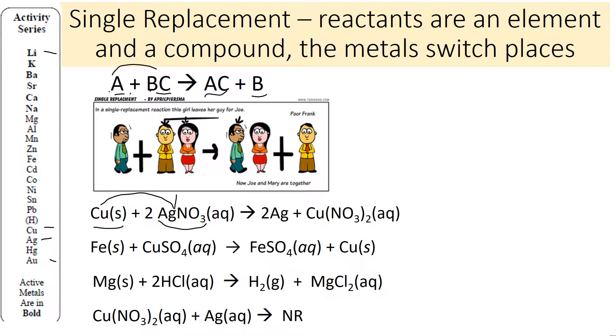The copper is going to go with the nitrate, and the silver is going to be by itself. Now, you may wonder what's that two doing, AgNO3 subscript 2, and that has to do with the charge. Silver has a plus one charge, and copper has more than one possible charge, but in this compound it's plus two. Since it's plus two and nitrate is minus one, it needs that two to balance the charge. That's why the two in front of Ag happens as well.